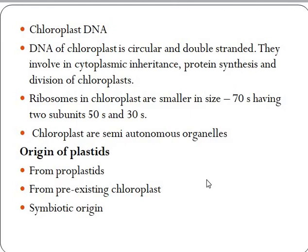The internal structure of the chloroplast also contains DNA. The DNA present in the chloroplast is double-stranded and circular. This chloroplast DNA is involved in cytoplasmic inheritance, protein synthesis, and division of the chloroplast. Chloroplast also contains ribosomes — the organelles meant for protein synthesis — having a size of 70 Svedberg units with two subunits: 50S and 30S. Since chloroplasts contain DNA, they are called semi-autonomous organelles.